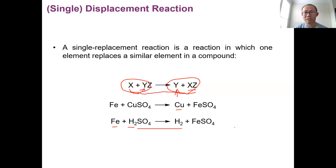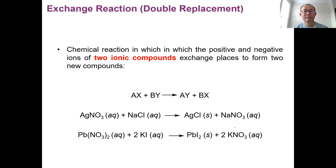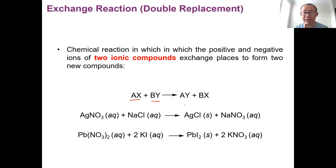The fourth type is called a double displacement reaction, or sometimes called exchange reaction. By the word 'exchange,' you see that it basically involves two ionic compounds — AX and BY, two ionic compounds. Ionic compounds have a positive ion and a negative ion.